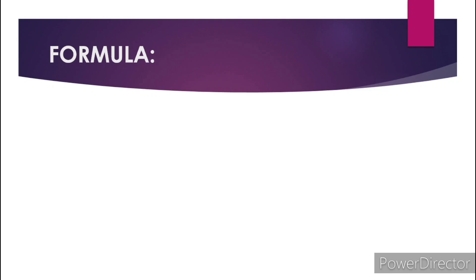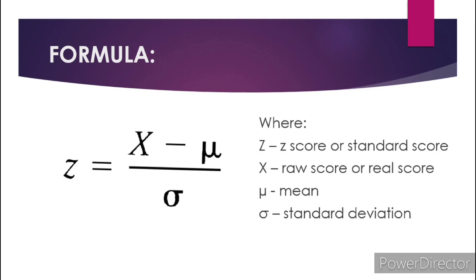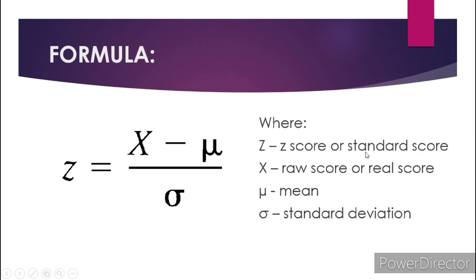In order for you to understand that carefully, let's consider this formula. We have our formula for finding the Z-score or standard score: Z is equal to X minus the mean, divided by the standard deviation. Z stands for the Z-score or standard score, X is our raw score or real score, the mean symbol is our mean, and the last symbol is our standard deviation.